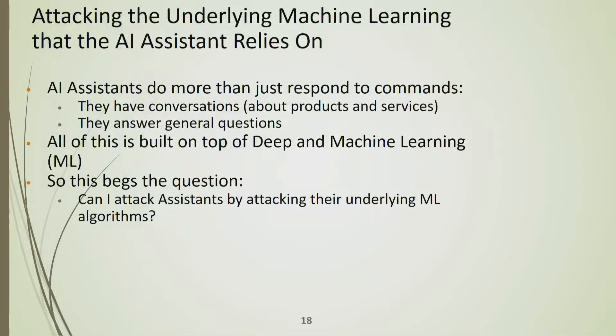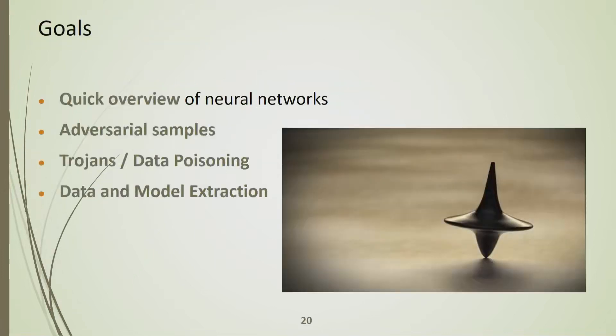We've talked about physical attacks and business logic attacks. Can you attack the machine learning that underlies all this? Yes. We're going to cover: a quick overview of neural networks, adversarial samples, Trojans and data poisoning, and finally training data extraction and model extraction — basically how bad guys can steal all your hard work through your APIs.